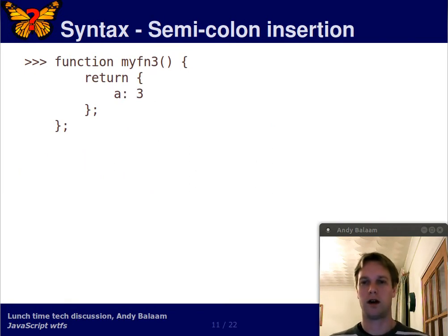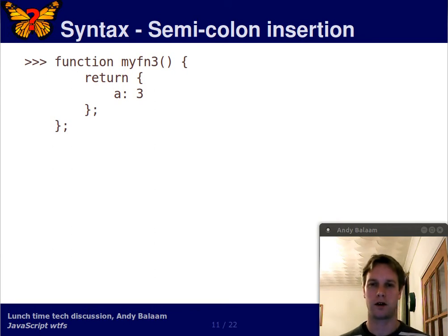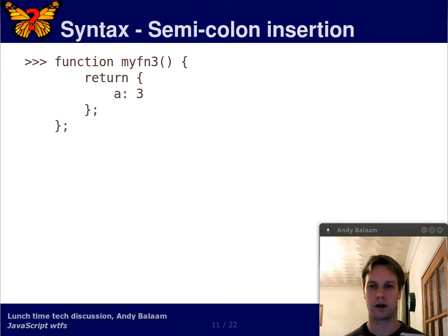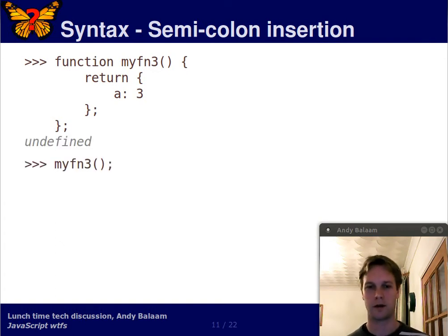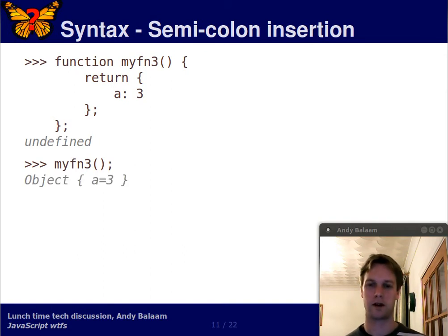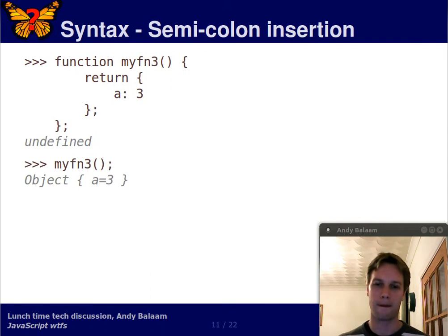Let's move on to some more interesting syntax. Imagine you've got a function called myfun3. The definition of this function is just one line — it returns an object, and that object has a property called a whose value is 3. We declare it, we run it. The answer is what you'd expect: an object which has one property, a, whose value is 3.